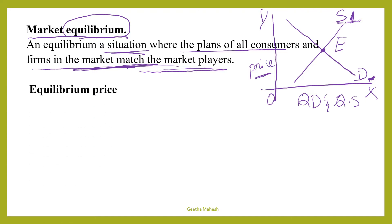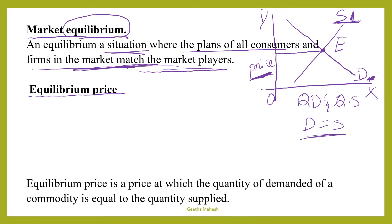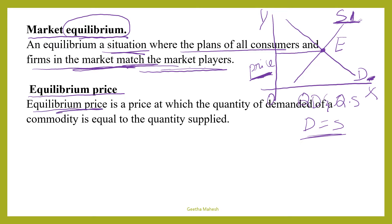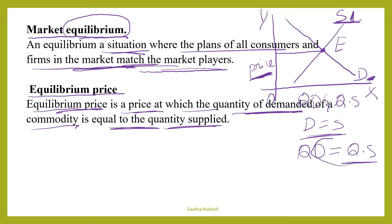What do you mean by equilibrium price? It is a situation where demand for a good is exactly equal to supply of a good. Equilibrium price is the price at which demand intersects supply, or it is a price at which demand is equal to supply. Equilibrium price is the price at which quantity demanded of a commodity is equal to quantity supplied.